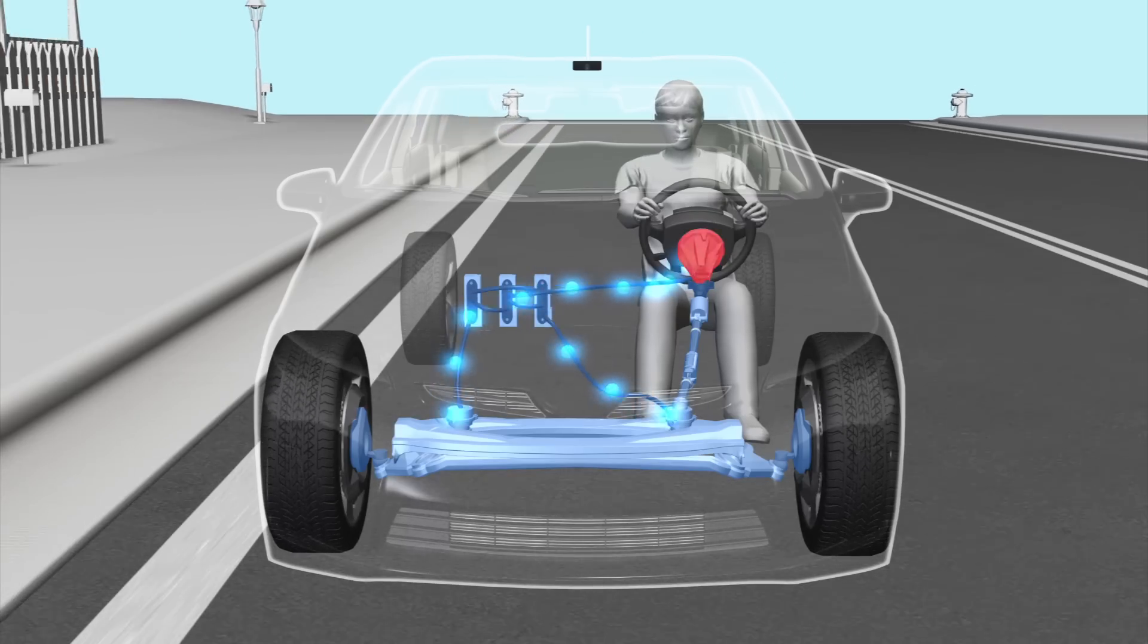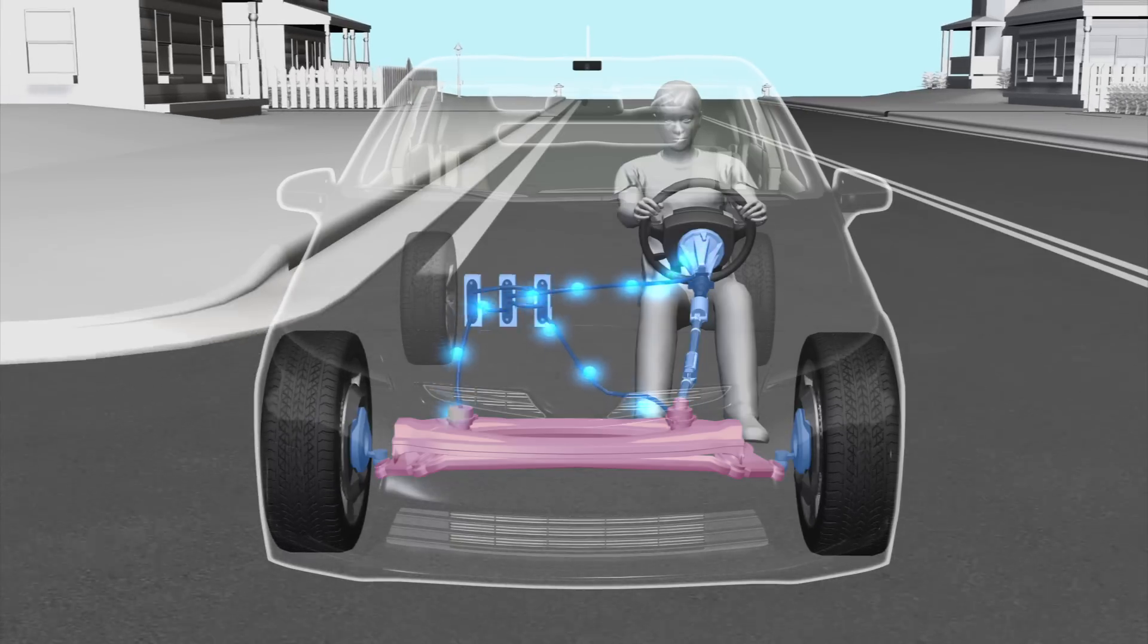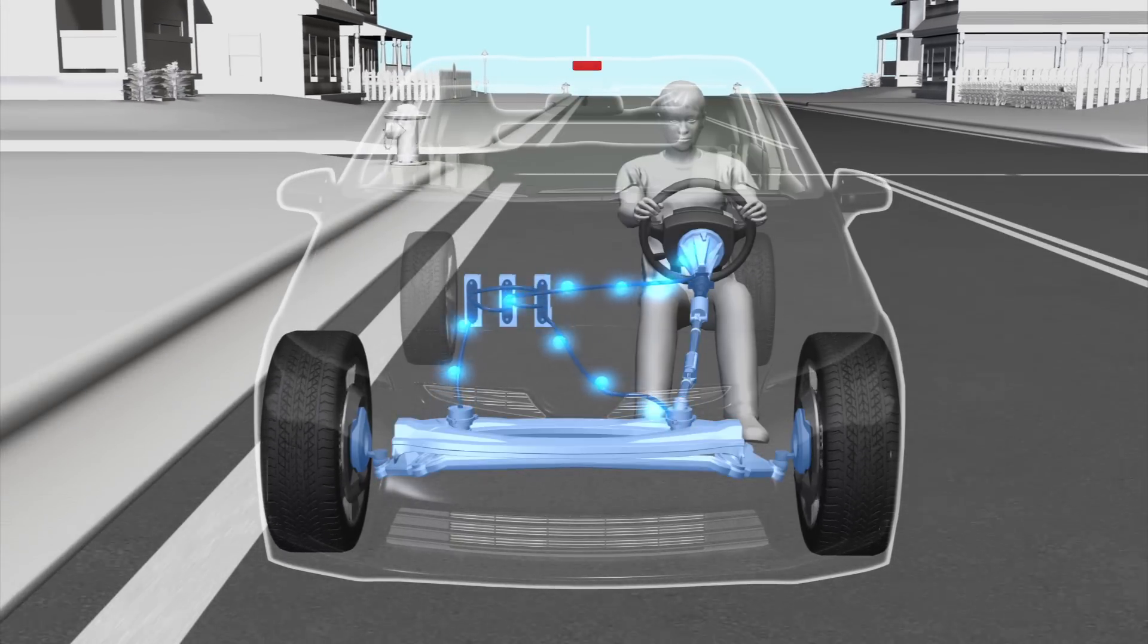The system consists of a steering force actuator, a backup clutch, an electric control unit, a steering angle actuator, and a camera and processing module.